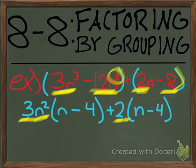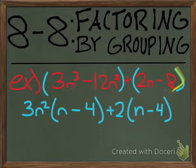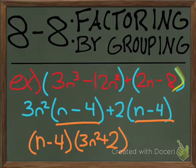You know you've done this correctly when you are left with the same binomial twice, the n-4. So you can now factor out the n-4 just like in that AC multiplying method.